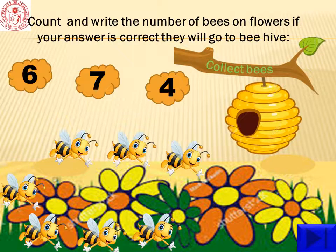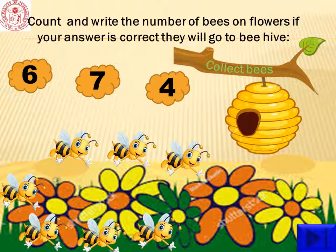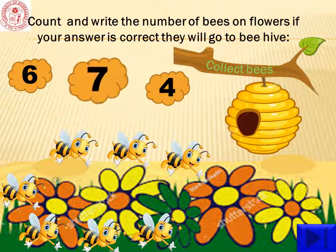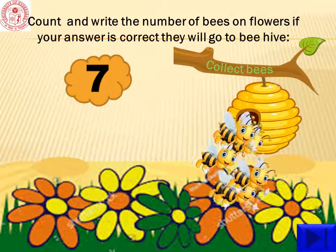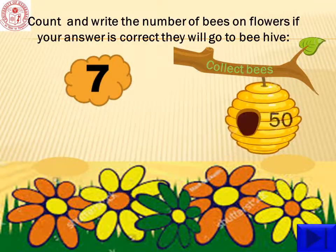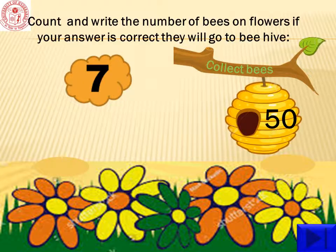Let us count how many bees are there on the flowers. One, two, three, four, five, six, seven. Yes, there are seven bees. Click on number seven. Children, they are flying into the beehive. Wow, we got 50 bees.